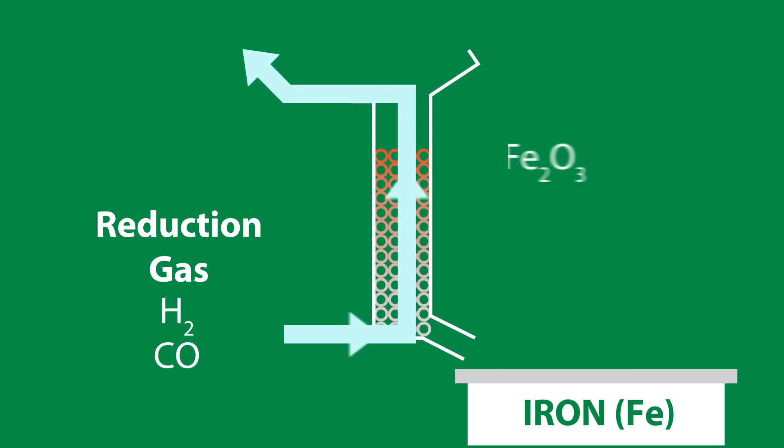The iron ore pellet is made up of hematite, which is Fe2O3. It reacts with hydrogen or carbon monoxide to form magnetite, which is Fe3O4. Fe3O4 again reacts with hydrogen or carbon monoxide to form wüstite, which is FeO. They are converted into iron, again using the hydrogen or carbon monoxide.